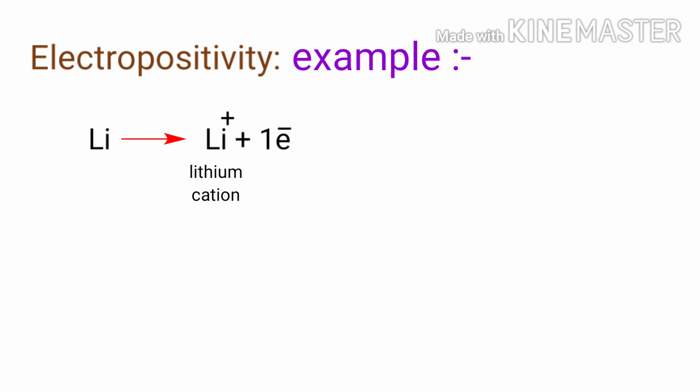For example, lithium has one valence electron — it tends to lose one electron and form a lithium cation. Sodium also has one valence electron, and it tends to lose one electron and form a sodium ion.